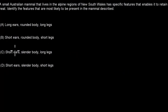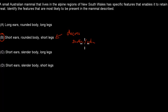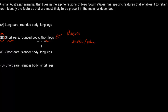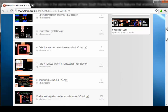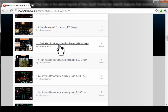The correct answer is B. The reason is all to do with a decrease in surface area to volume ratio — the less surface area you expose, the less heat you lose. Short ears mean less blood flowing to the ears, short legs mean less heat loss, and a rounded body means more internal volume compared to surface area, like a polar bear. These are adaptations to prevent heat loss, covered in videos 10 and 11: Ectotherms and Australian Ectotherms.